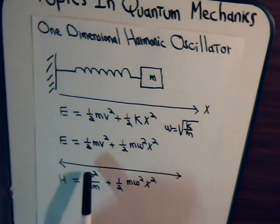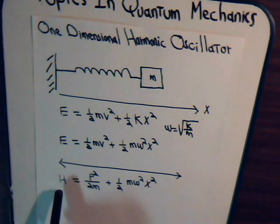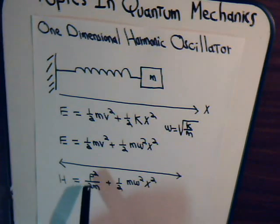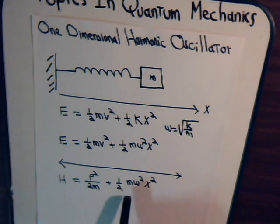Now, we're considering a particle moving back and forth on the x-axis, the Hamiltonian, that would be the equivalent of the total energy of the system, that's p squared over 2m, and now the potential energy term, that's one-half m omega squared x squared.